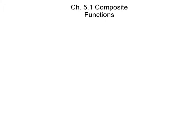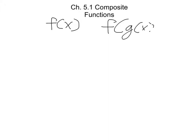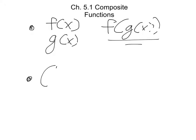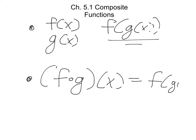A composite function is a function inside of a function. So if you have f of x as a function, a composite function would be f of g of x, if g of x is another function. You can either write it like f of g of x, or another way you'll see it is f with a little circle and then g of x — like 'fog.' That's the same thing as f of g of x.